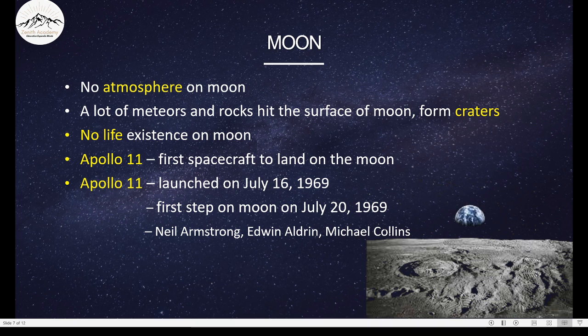Another fact about the Moon, the Moon has no atmosphere, so life cannot exist on Moon. A lot of meteors and rocks hit the surface of Moon, and thus form craters. This rough surface you can see, this is how the surface of Moon looks, and these are some craters that are formed. There is no life existence on Moon, as I mentioned, because there is no atmosphere.